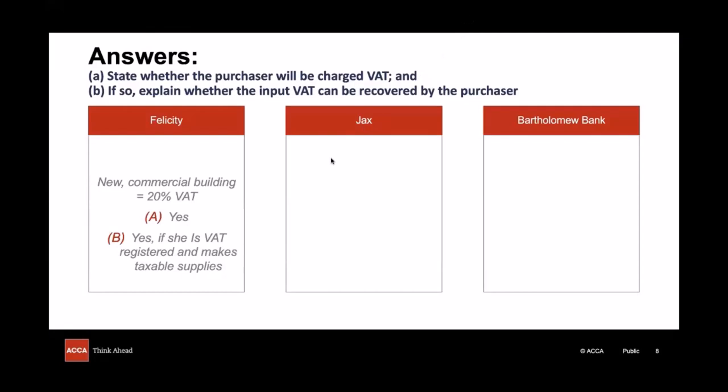First of all, let's consider Felicity. This is a new commercial building and we're not told whether it's freehold or not, so I'm going to assume it is, and therefore it falls under one of our exceptions and so VAT will be charged on the sale at the standard rate of 20% — so that answers part A. For part B, we need to explain whether the purchaser can recover this as input VAT suffered. Felicity is using the building for creating ceramics, and so as long as she is VAT registered and making taxable supplies with her business, then she will be able to reclaim the VAT on this building.